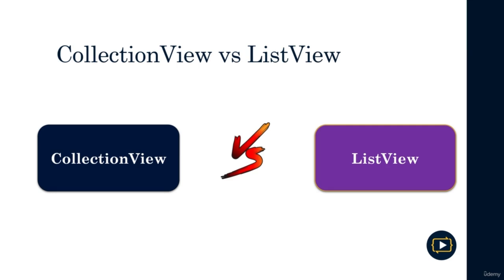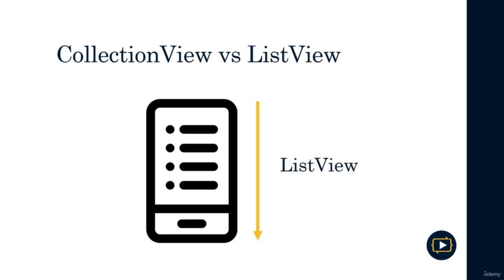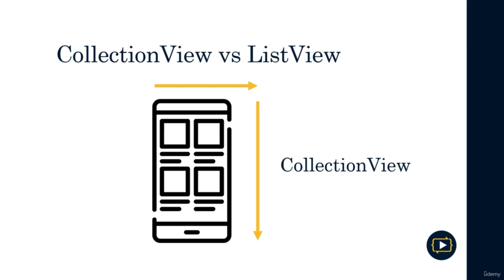Previously, we have seen that there are two controls that allow us the management of collections, so you may be wondering which one to use. To find out, let's look at some of the features of the collection view which make it different from a list view. With a list view control you can only define vertical lists, which may limit the application layouts you build. The collection view control, on the other hand, has a flexible design model, allowing information to be presented either horizontally, vertically, in a list, or in the form of a grid.